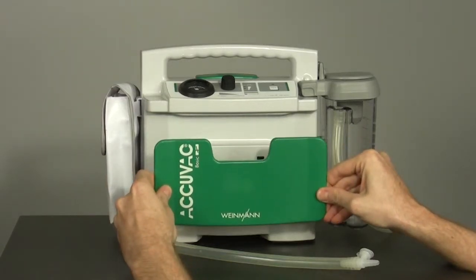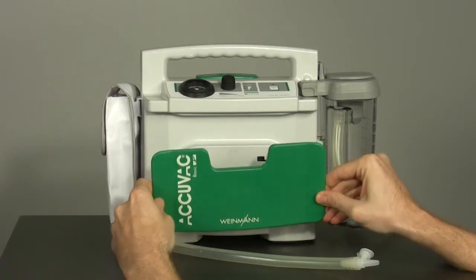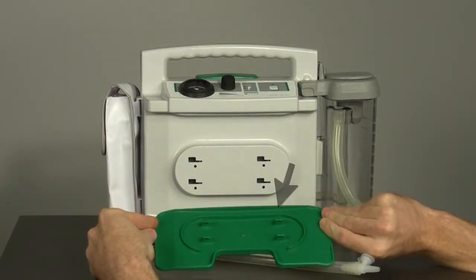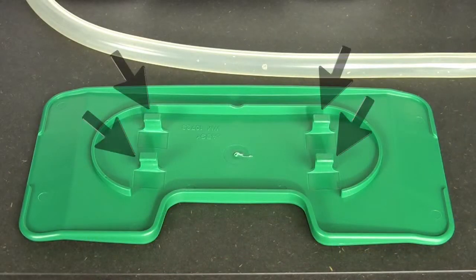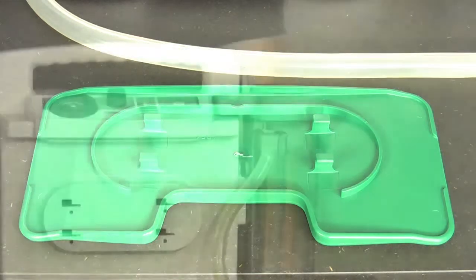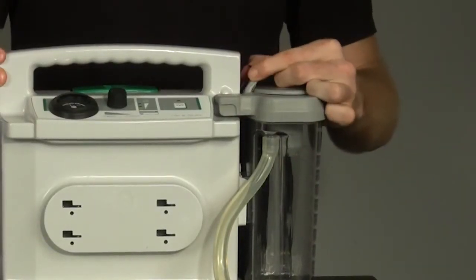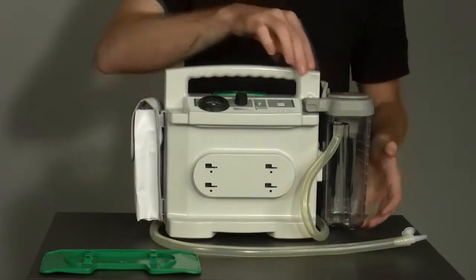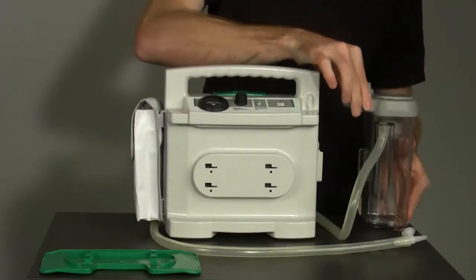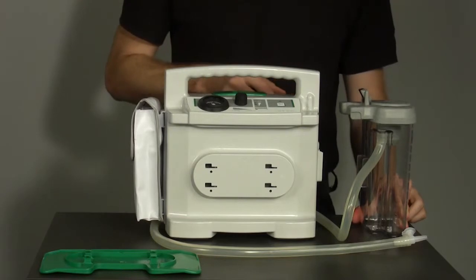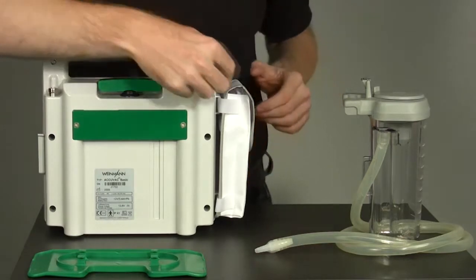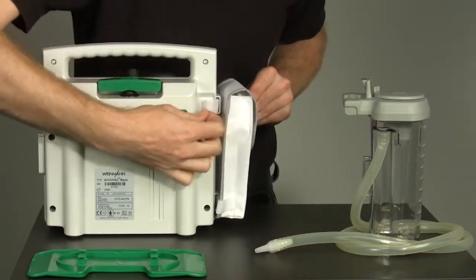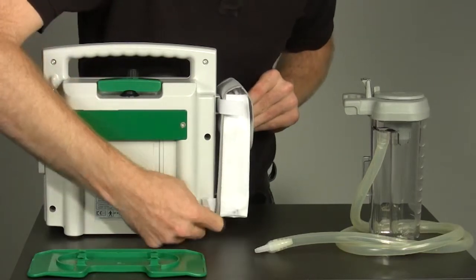Now you can loosen the tube holder plate from its anchor by pulling it toward you. Please note that there are four locating clips on the back side of the tube holder plate that keep it in place on the motor unit. If the locating clips break off, you will have to replace the tube holder plate. Disconnect the collection canister by pulling out the locking tab. Then you can push the closed canister upwards and out of its holder. The accessories bag is simply fastened to the motor unit with two Velcro straps. Open the Velcro closures and pull the accessories bag from the motor unit.